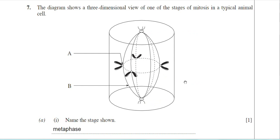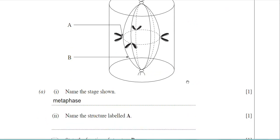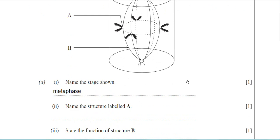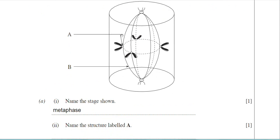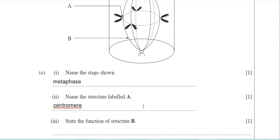Moving on then, part two: name the structure labelled A. The examiner has got an arrow very accurately pointing to that spherical region of the chromosome. So the answer there is not the chromosome because the arrow isn't pointing to the chromosome. It's pointing to a particular part of the chromosome and that structure there is the centromere. This is where the two sister chromatids actually join.